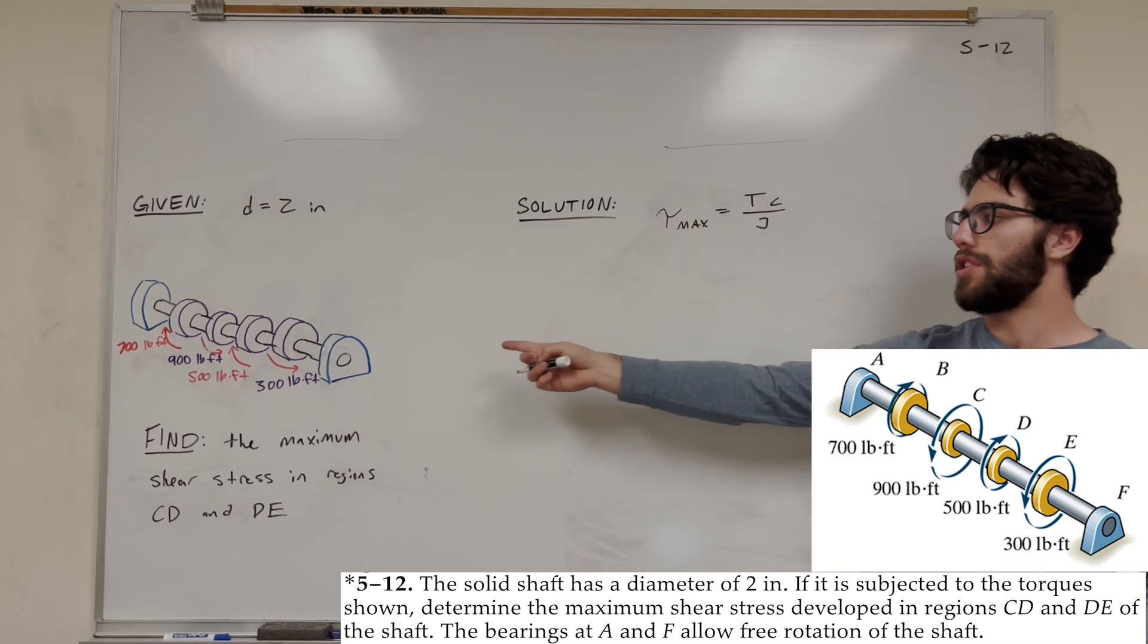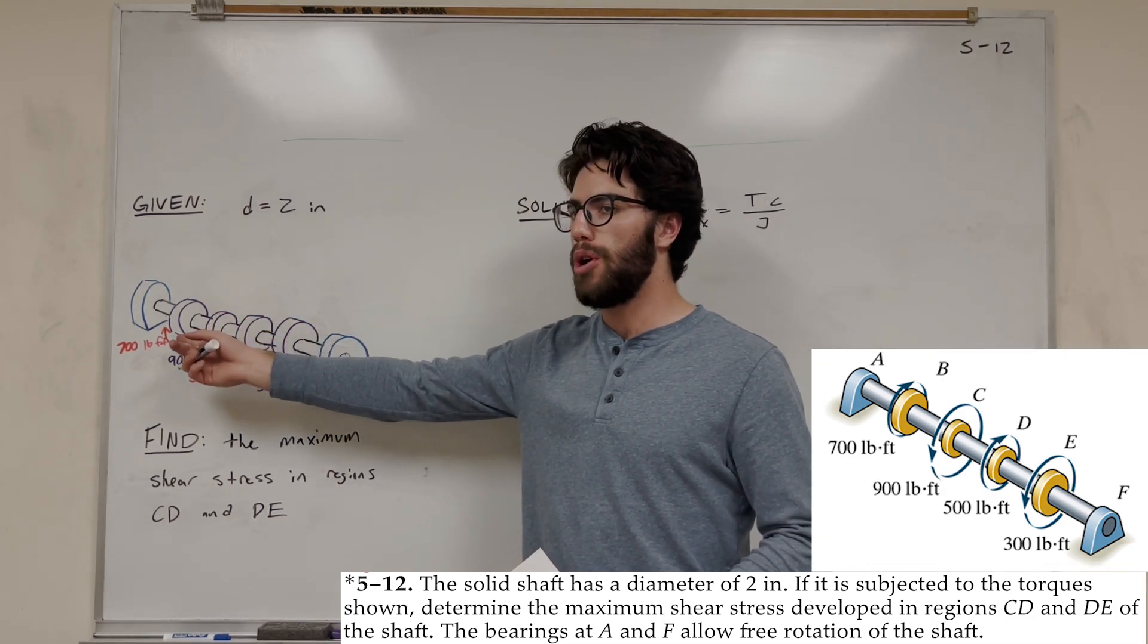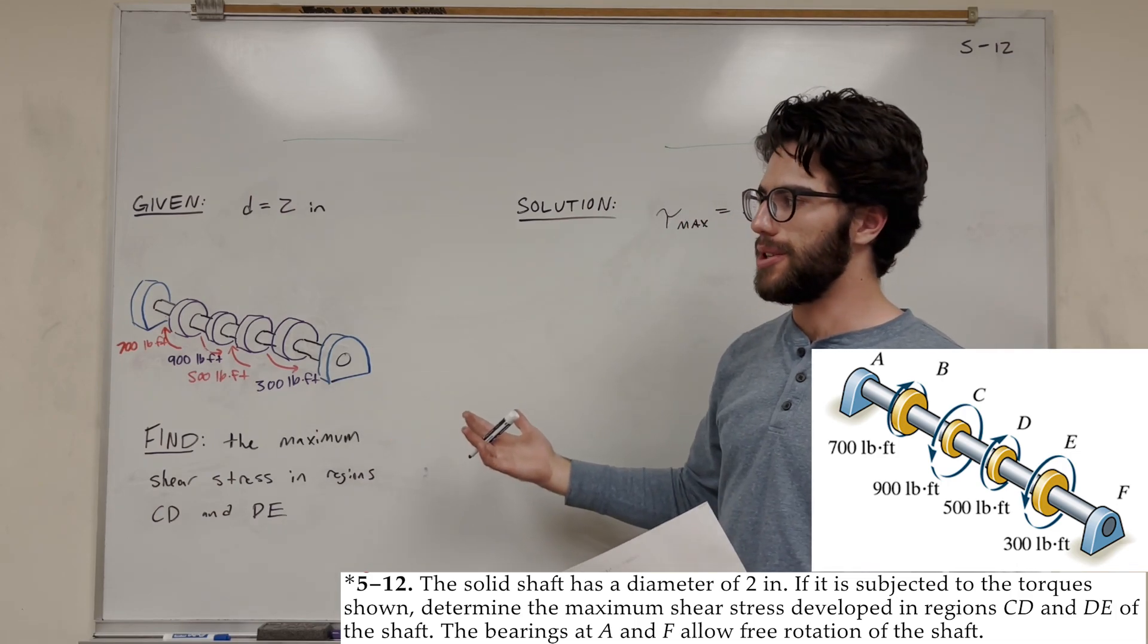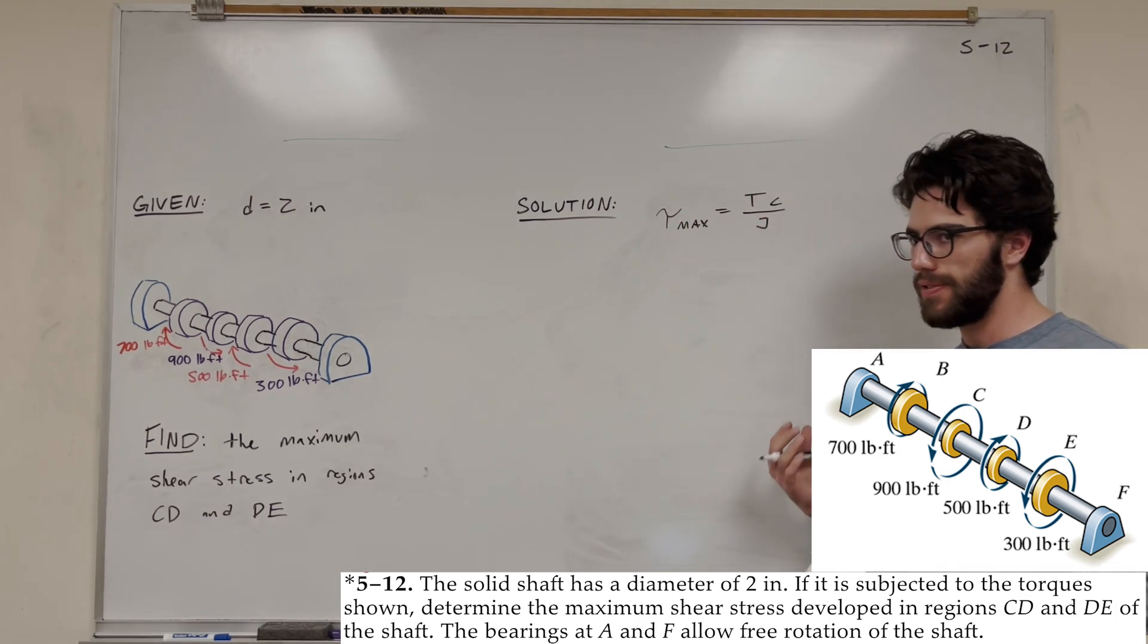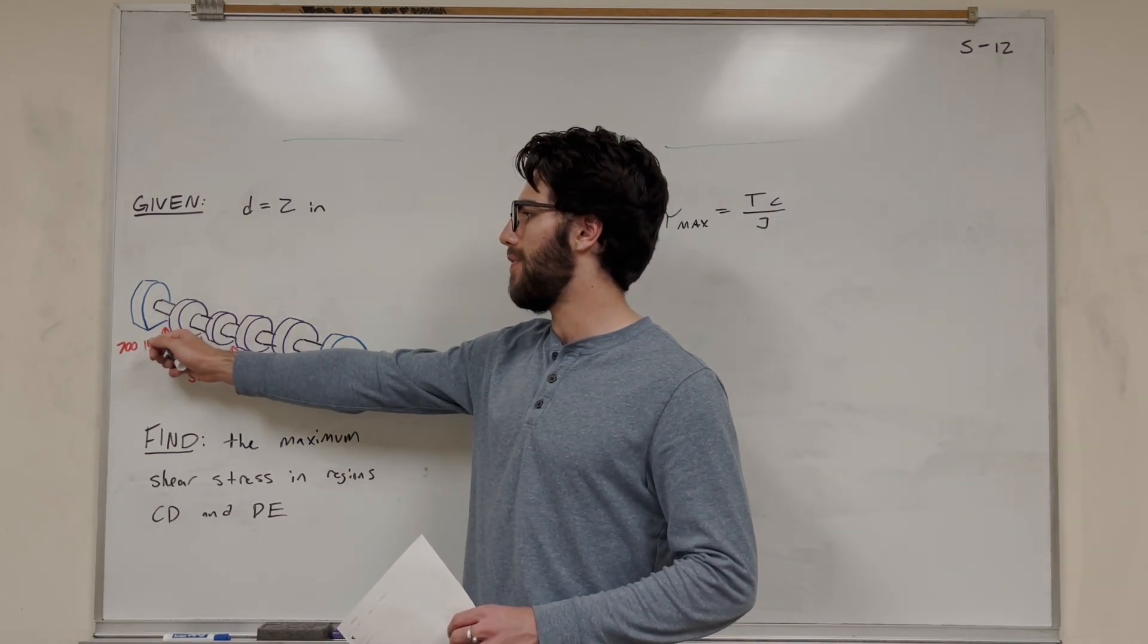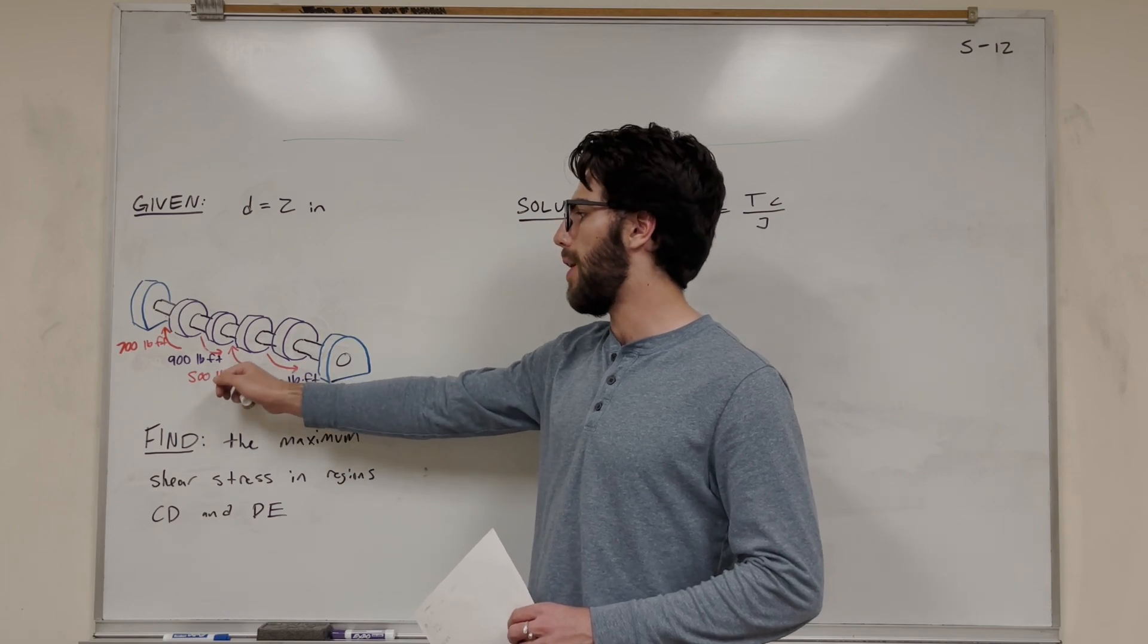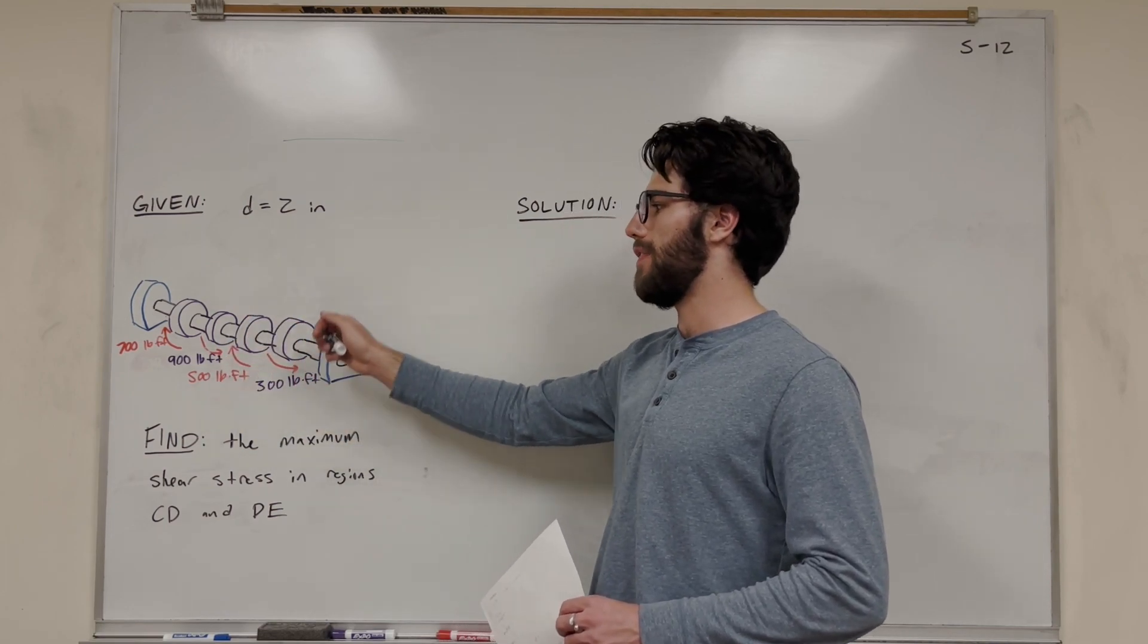So let's solve this problem. We're given this rod with a diameter of 2 inches, and it has these 4 moments acting on it. Hopefully this drawing is doing the problem justice, but I found I have another image on the screen you can look at. It's basically 700 pound-feet clockwise, then 900 pound-feet counterclockwise, 500 pound-feet clockwise, then 300 pound-feet counterclockwise.